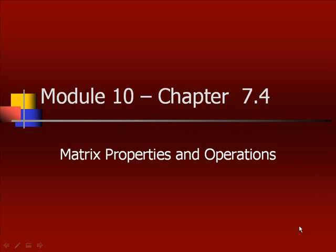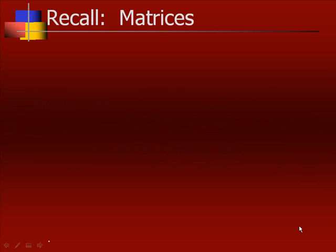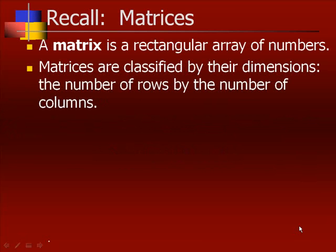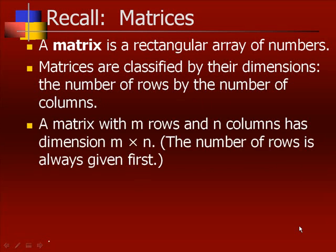Module 10, Chapter 7.4, Matrix Properties and Operations. Recall that a matrix is a rectangular array of numbers. Matrices are classified by their dimensions, the number of rows by the number of columns. A matrix with m rows and n columns has a dimension m by n. The number of rows is always given first.